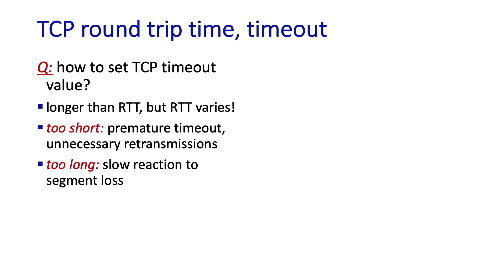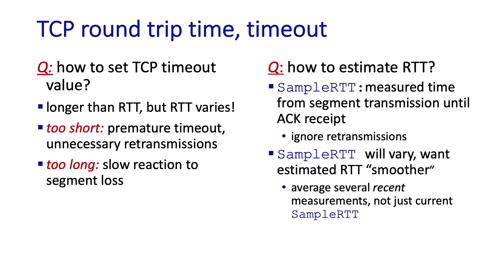How should timeout values be set? We want the timer values to depend on the round-trip time, the RTT. If we set the timeout too short, we'll have premature timeouts, resending segments that haven't actually been lost. If we wait too long, TCP will be slow to react to segment loss. We can estimate the RTT by starting a timer when a segment is transmitted and stopping it when an ACK is received, giving us a sample RTT. However, those samples can vary quite a bit, so we want to use a smoothed averaged value of the sample RTT.